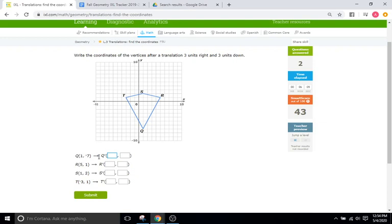So 1 plus 3 is 4. Now do the x's this time. So 1 plus 3 is 4. 5 plus 3 is 8. 1 plus 3 is 4. And negative 3 plus 3 is 0. Okay.